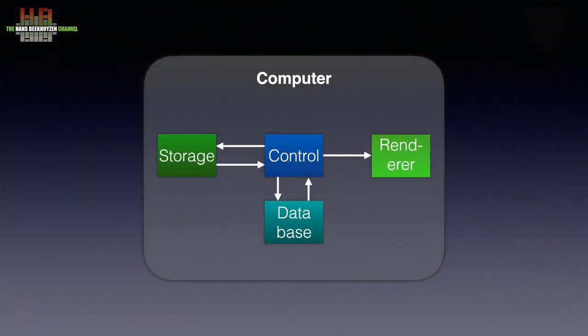MP3s were ideal since they were about 10% of the data. Hard disk capacity was expensive at that time and sharing over the internet was slow. When we look at the block diagram of such a setup we see control, storage, database and renderer — control being the sum of the operating system and the music player software, storage being the hard disk, and the renderer being the software mixer of the operating system and the internal digital-to-analog conversion. The software mixer might have changed the level and even the sampling rate, but no one cared — sound quality was less of an item for those youngsters since low-quality audio was all they could afford anyway.